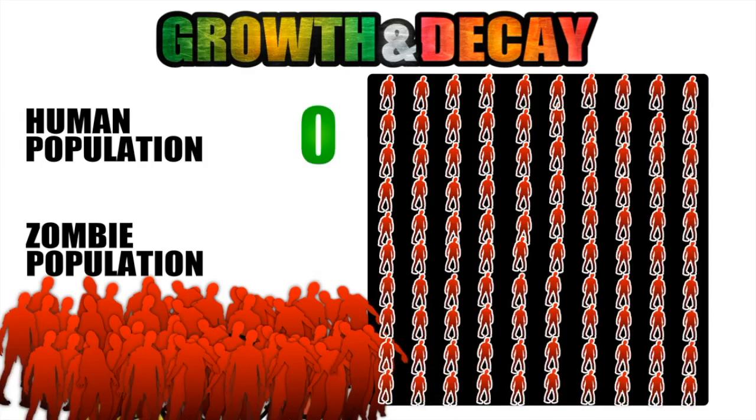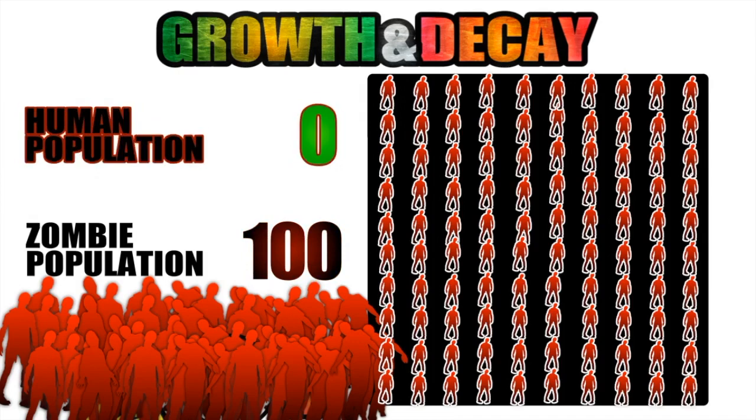So now we can see just how quickly an infection can spread and now we are left with a zombie population of 100 and a human population of zero. They have completely taken over.